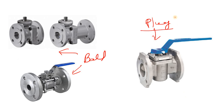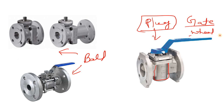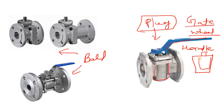Now, how can you identify a ball valve or plug valve in industry? For the plug valve, the port looks similar to a gate valve. The difference is that a gate valve has a wheel, but the plug valve has a handle. If you know the disc shape, you can identify the valve in industry — the outer body will look like the plug valve shape.